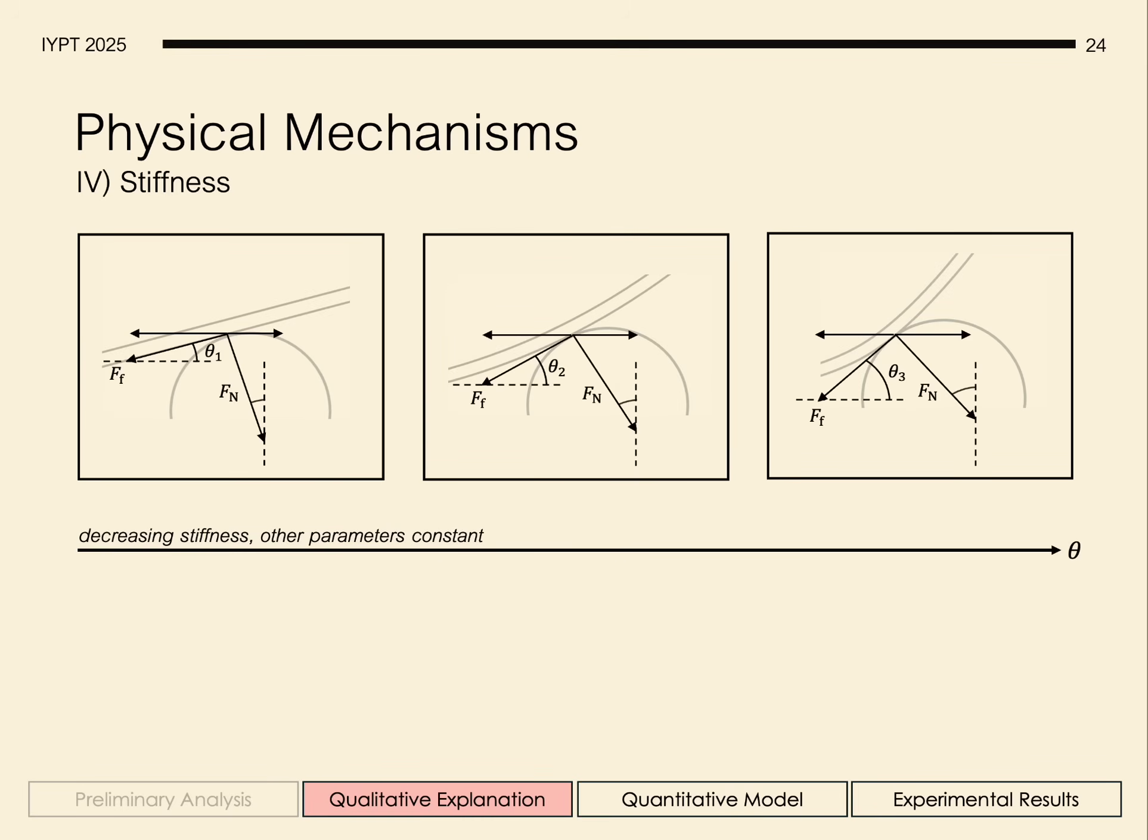And so as we decrease stiffness and keep other parameters constant, the degree of curvature of the rulers increases, which increases theta. For example, when the rulers are very stiff, the ruler is relatively straighter and theta is very small.